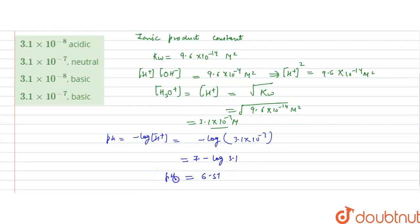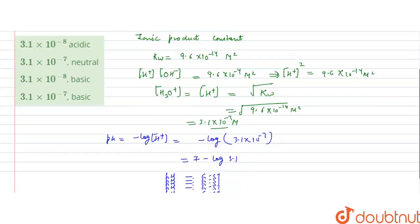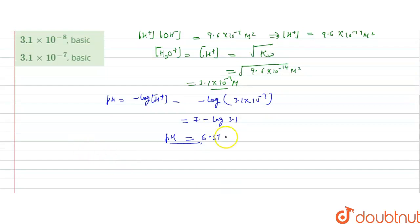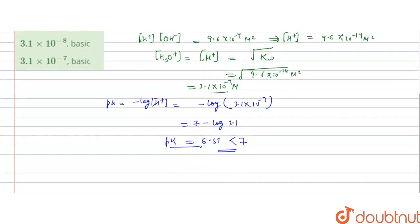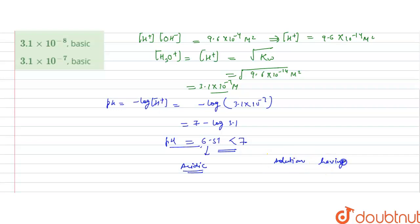This means the neutral solution at 60 degrees Celsius has a pH of 6.51, which is less than 7. So a solution having pH 7 at 60 degrees Celsius is basic, because the neutral pH at that temperature is 6.51 — any pH above that is basic.